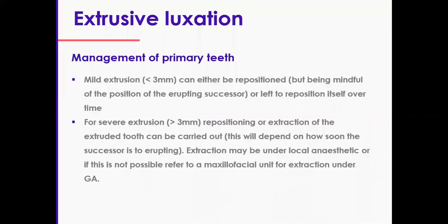To manage extrusion in primary teeth, if mild — which is less than three millimeters — either leave it to reposition itself or reposition it. But please remember the position of the developing permanent successors. These primary teeth, depending on age, usually have a labial curvature on the root, so the luxation typically happens away from the permanent tooth germ. Check it all clinically and take all these factors into account if you are to reposition these teeth.